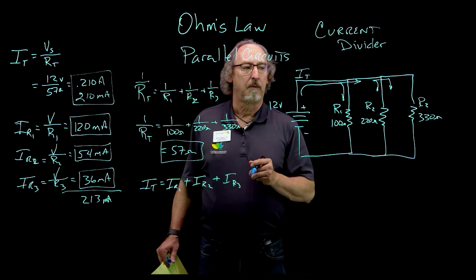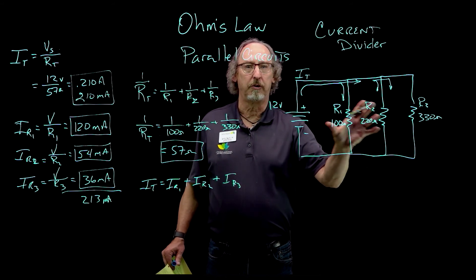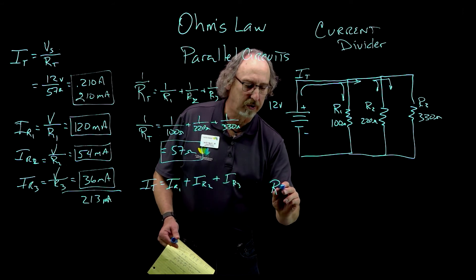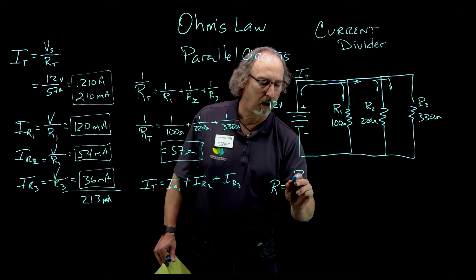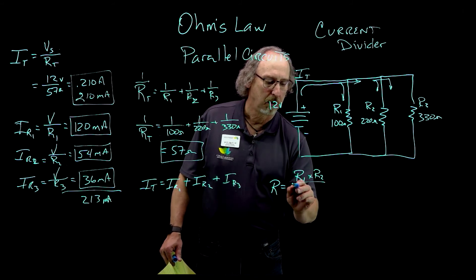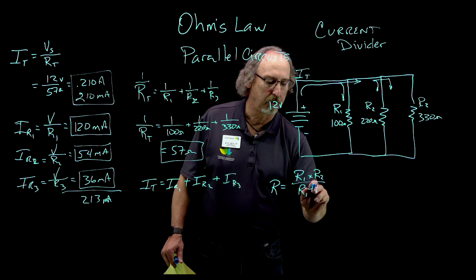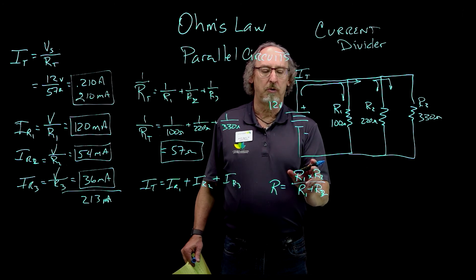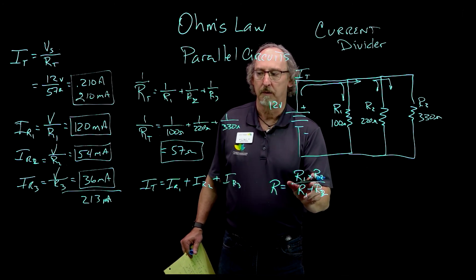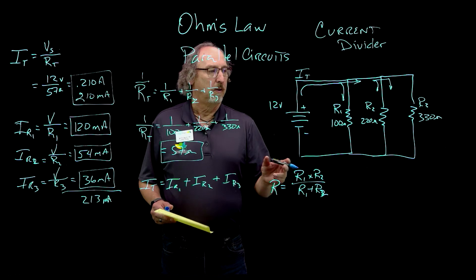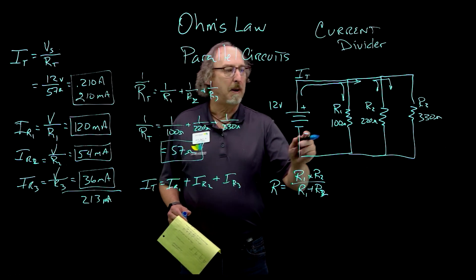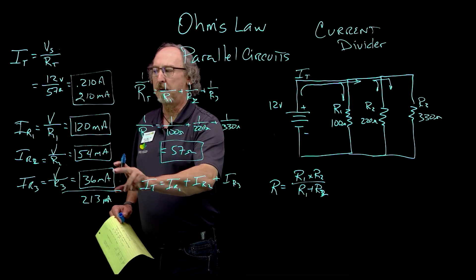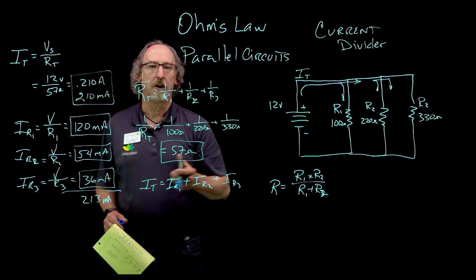Another shortcut: if you only have two resistors — and this only works with two resistors — you can calculate total resistance by taking R1 times R2 over R1 plus R2. That's the product-over-sum rule. But it only works with two resistors. So remember: your answers should be smaller than the smallest resistor, your currents should add up to your total current, and that is a parallel circuit.